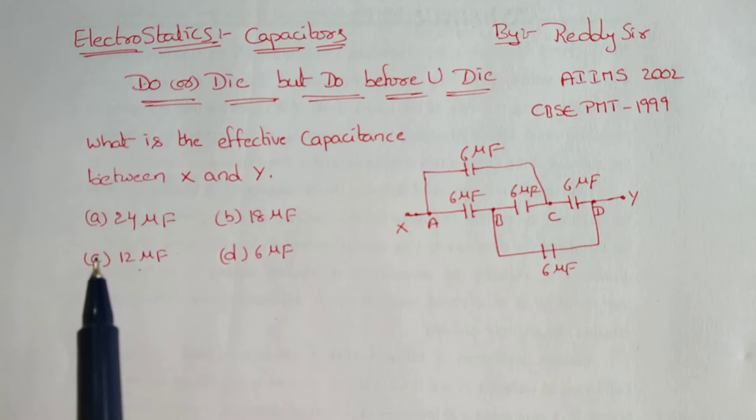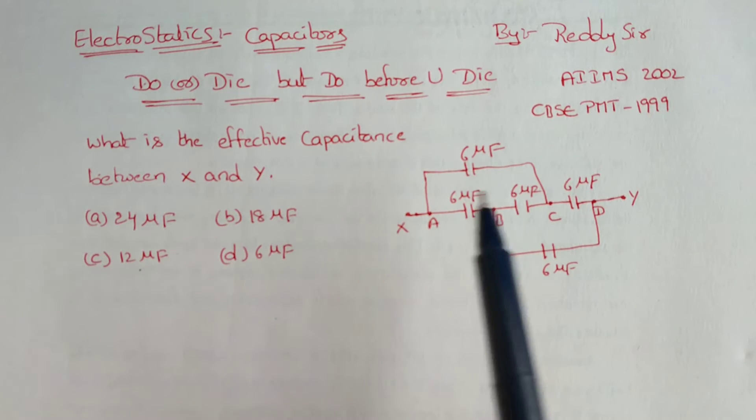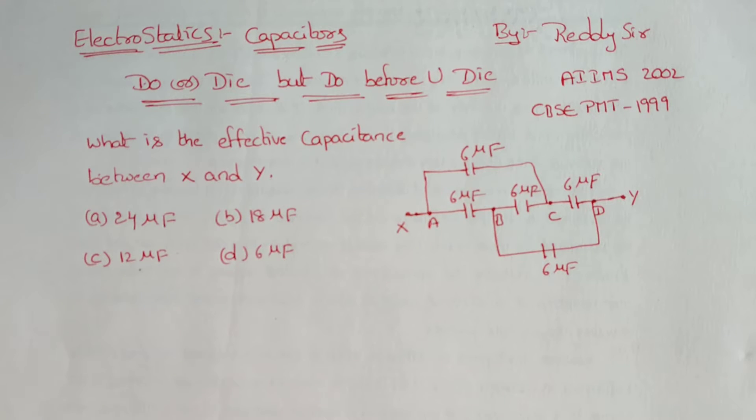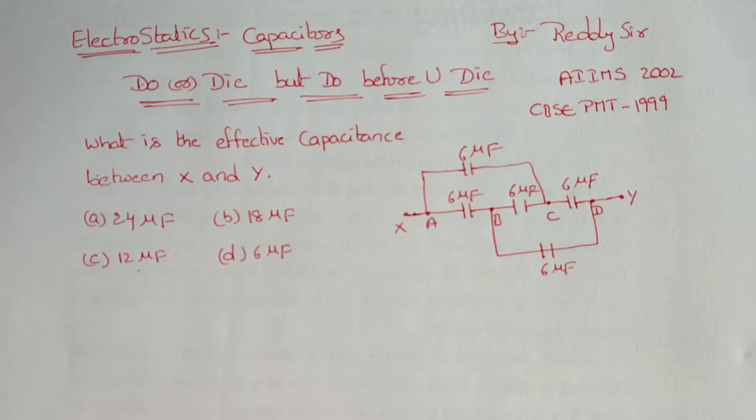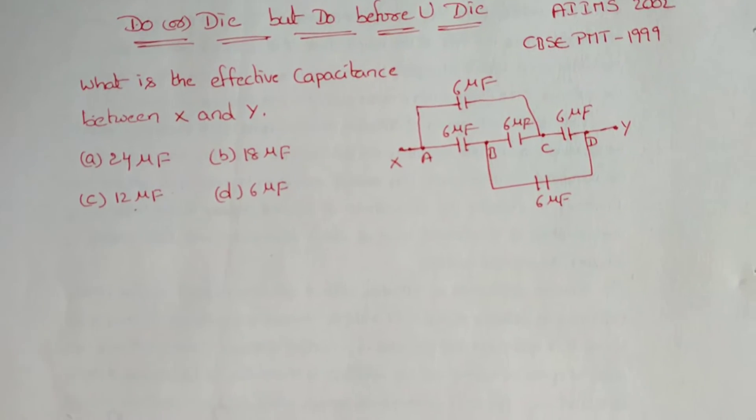Look at the question. What is the effective capacitance between X and Y? They have given some capacitors between X and Y, and we have to find the effective capacitance. For finding that effective capacitance, we have to redraw the circuit.